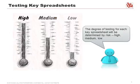The amount of testing we do depends on whether the spreadsheets are classified as high, medium, or low risk. For high risk, we do significantly more testing; for low risk, we reduce the amount of work required.